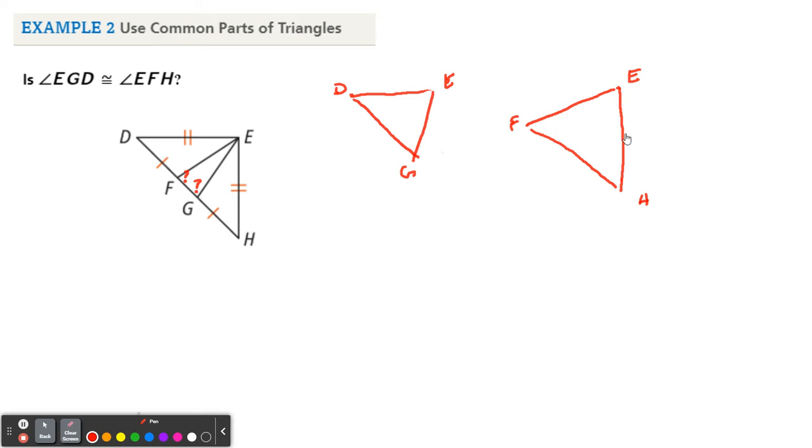Okay, sure. And right now, along DG, they have this point F and they give me that that's congruent. So DF. And over here along HF, they have this point G and that's congruent. And then they also gave us that the segment DE is congruent to segment EH. And again, we want to prove that angle EGD, this angle, is congruent to EFH, that angle.